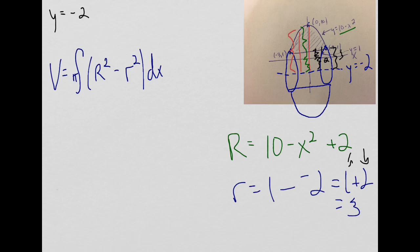So anyway, now I just need to take, I never simplified that big R. So that big R, maybe I'll rewrite them over here. So big R is equal to 12 minus x squared. And little r is equal to 3.